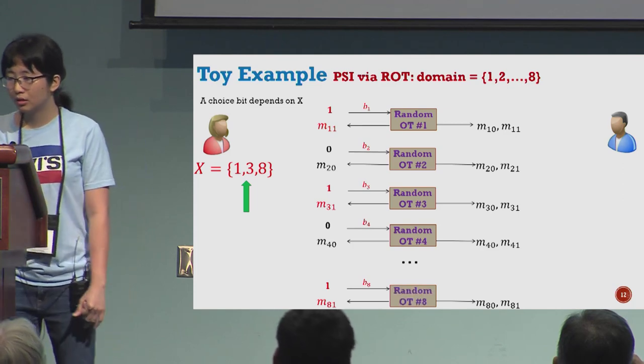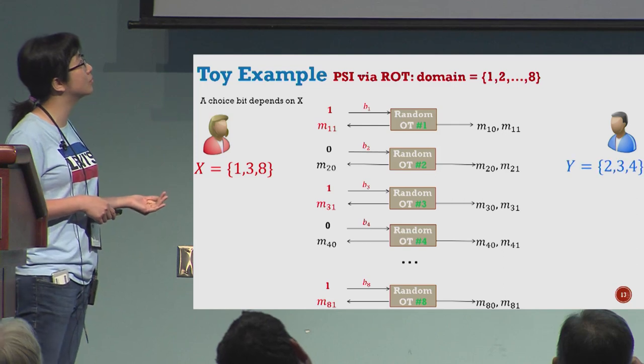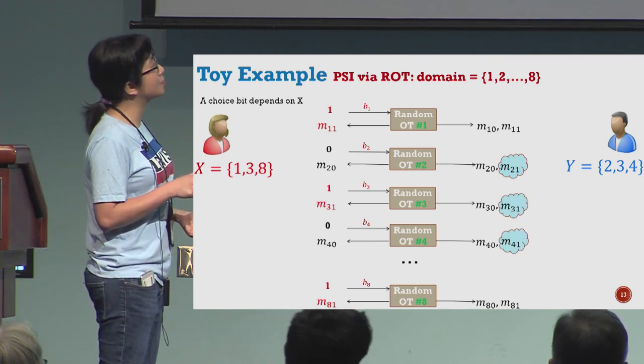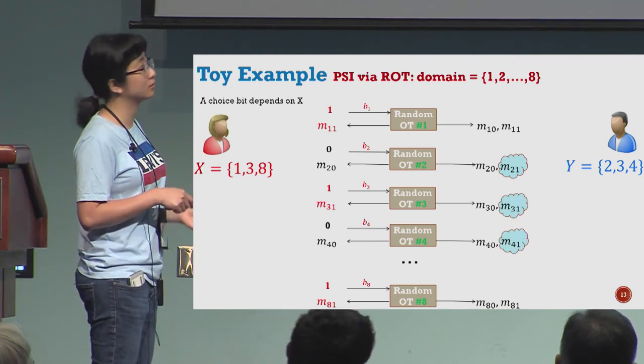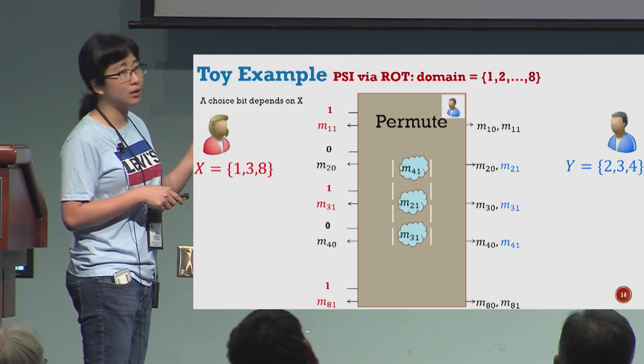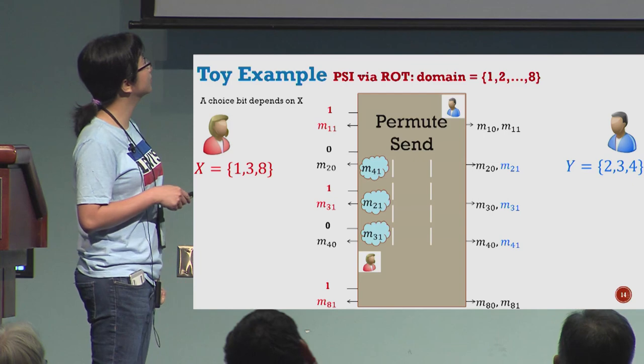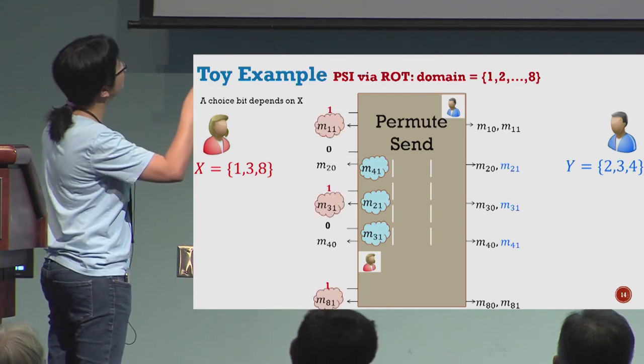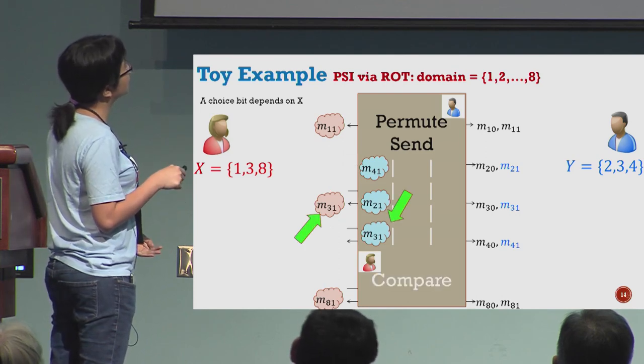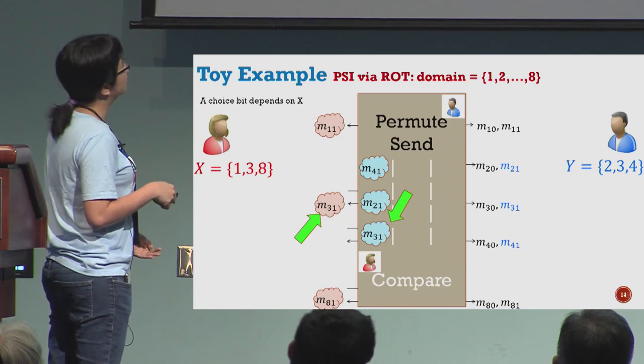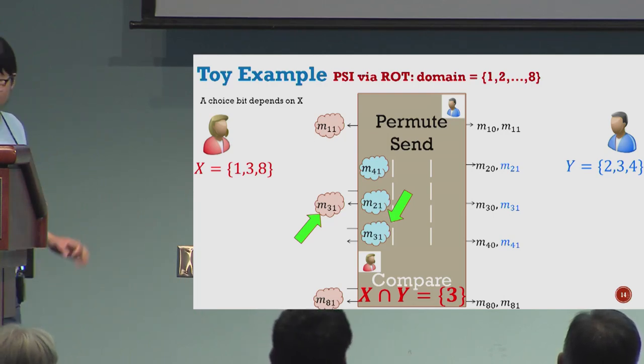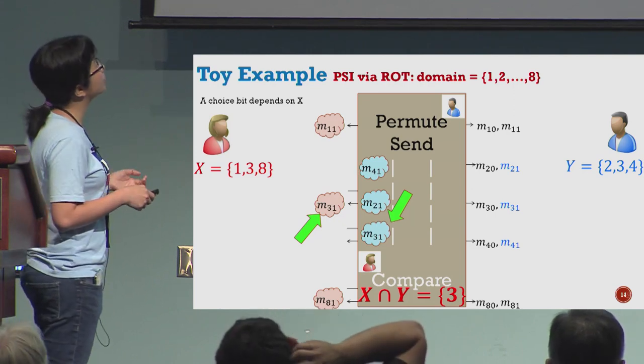Now if Bob has numbers 2, 3, and 4, Bob only looks at the blue values M21, M31, and M41. The next step is Bob will permute the values and send them to Alice. Alice also only looks at her red values, and now does the comparison. You can see that M31 shows up in two sets, so number 3 is the intersection.